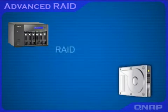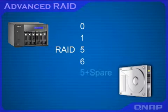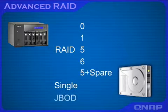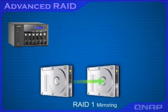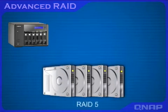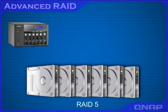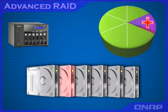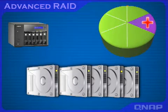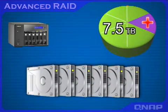The TS639 Pro offers advanced RAID 0, 1, 5, 6, 5+spare, single disk, and JBOD configurations. You can replace hard drives with larger ones through online RAID capacity expansion — all data are retained. RAID 5 allows one hard drive failure in the configuration. The NAS supports 1.5 TB hard drives, which means you can have up to 7.5 TB of storage capacity. RAID 6 allows a maximum of 2 hard drive failures simultaneously.